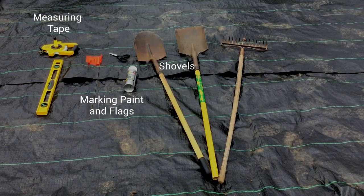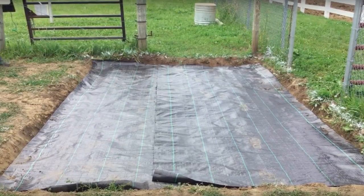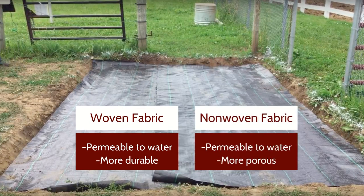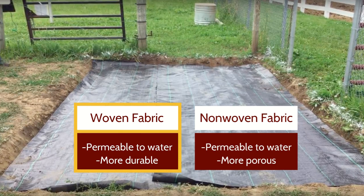You will also need geotextile fabric. Geotextile fabric comes in two varieties: woven and non-woven. Both are permeable to water, but the woven product is more durable, whereas the non-woven is more porous. Each product has its own advantages and should be selected based on your individual site needs. For this project we are using a woven material due to its durability and the freeze-thaw cycles in Minnesota.